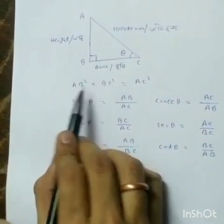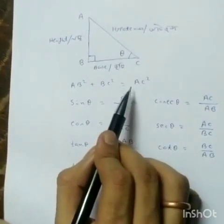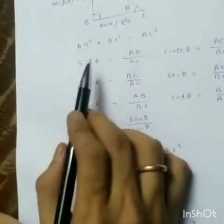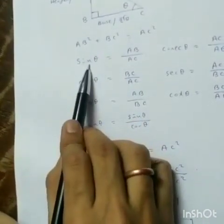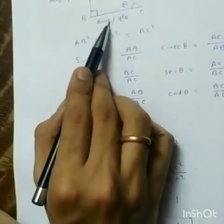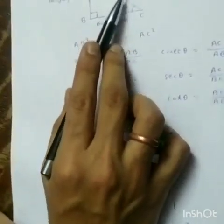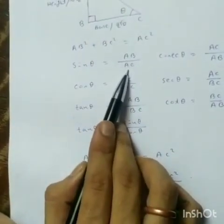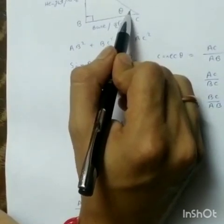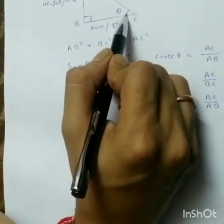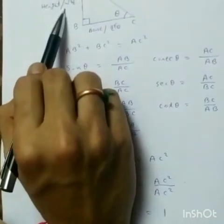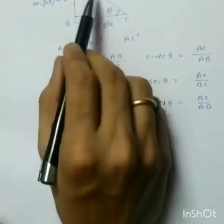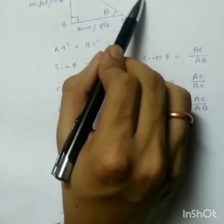We know that AB squared plus BC squared is equal to AC squared — the hypotenuse squared. Now, sin theta means height by hypotenuse, that is lombo by athibhuj, meaning AB by AC. With respect to angle theta, AB is the opposite side and BC is the adjacent side, and AC is the hypotenuse.